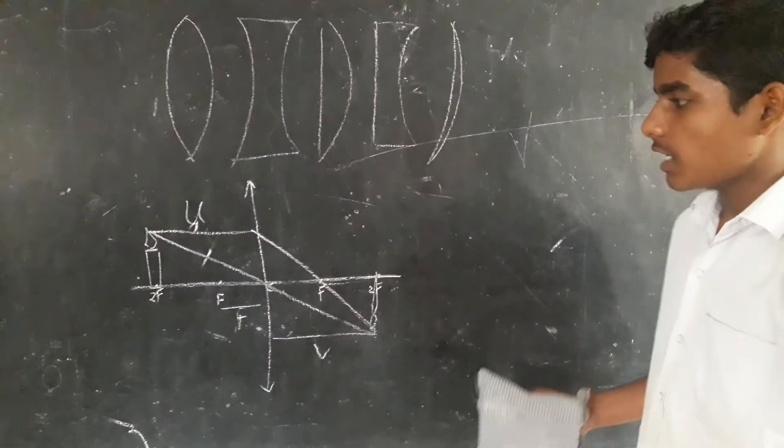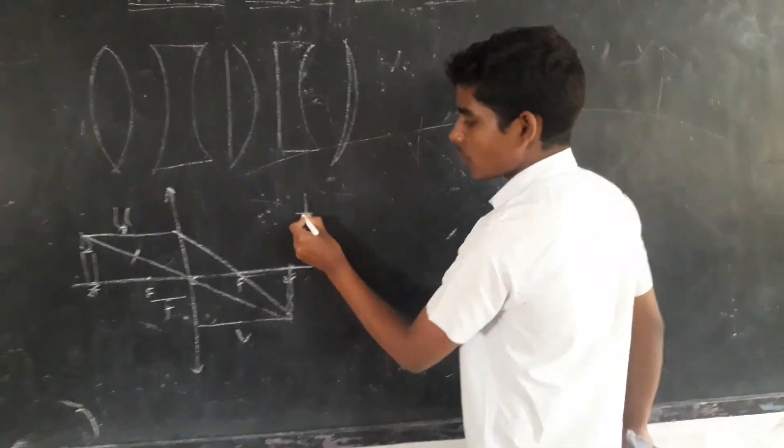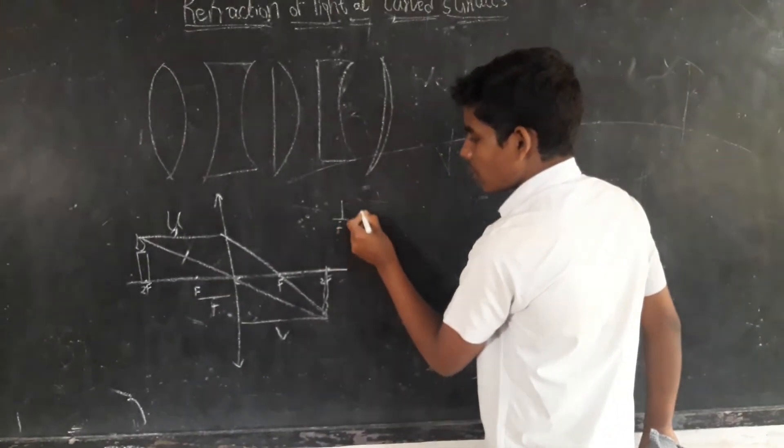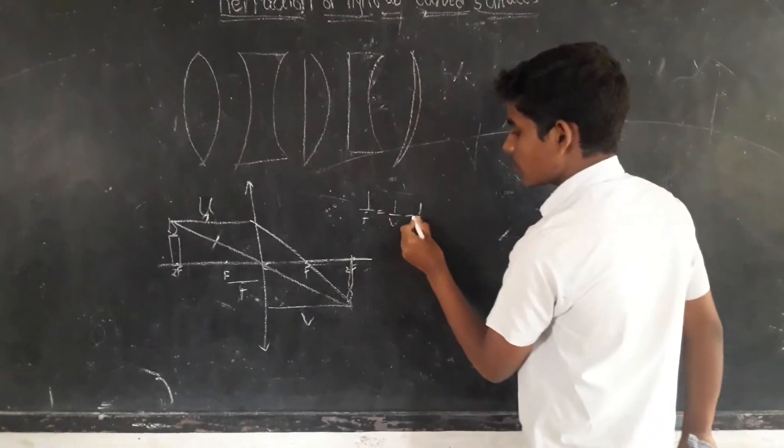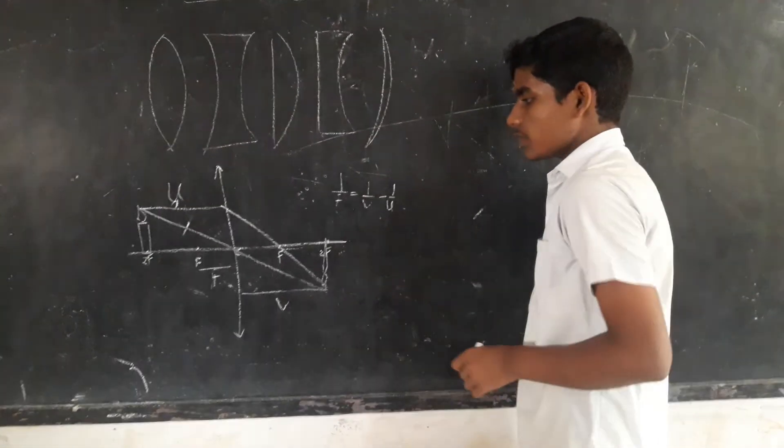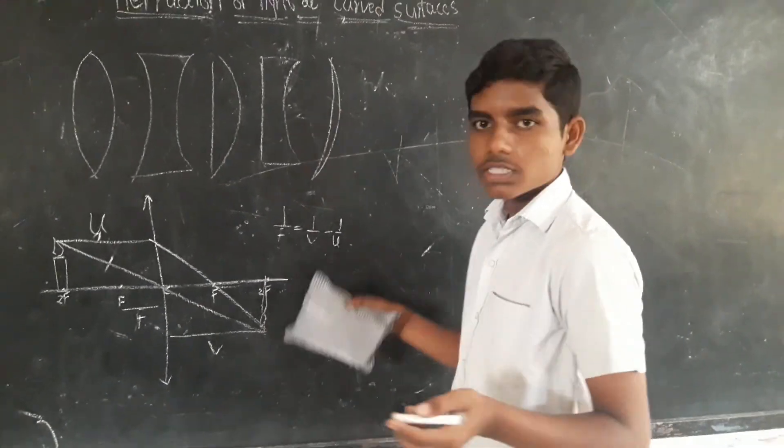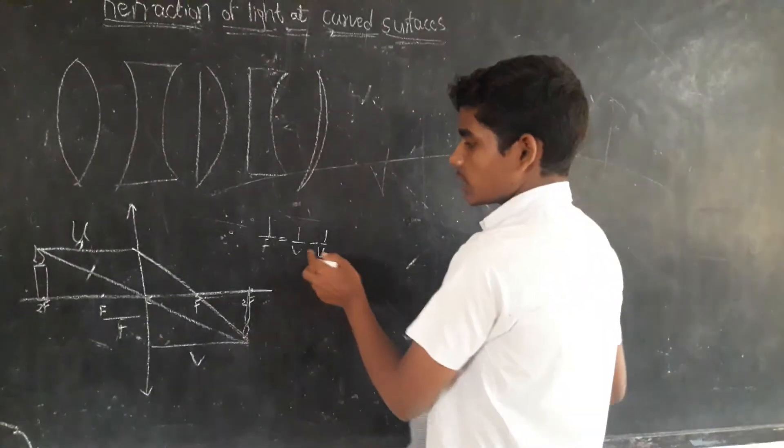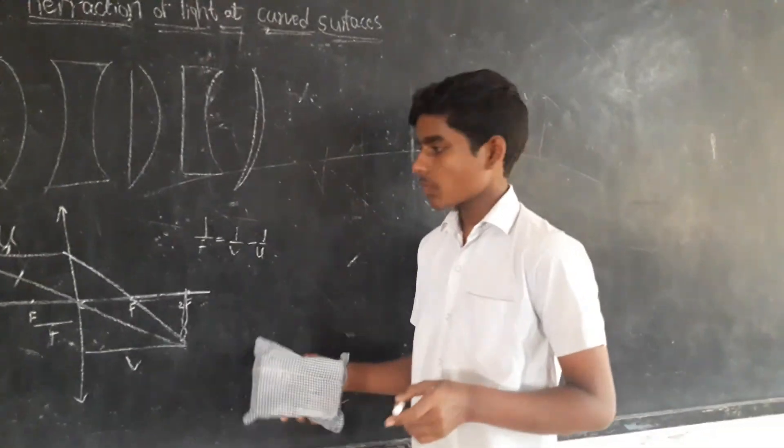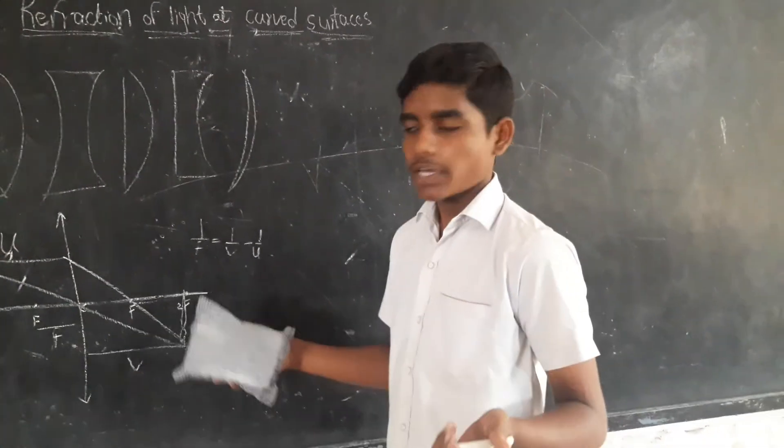What is the lens formula? The lens formula is 1 by f equal to 1 by v minus 1 by u. F is the focal length of the lens, V is the image distance, and U is the object distance. This lens formula is used to calculate the image distance.